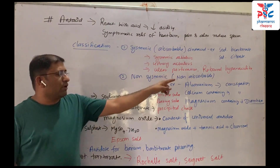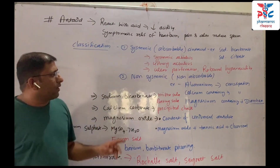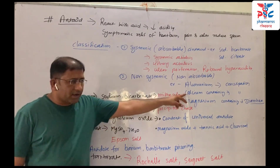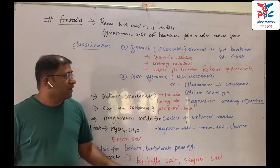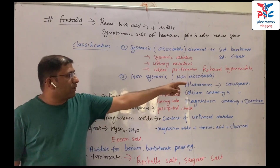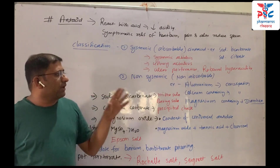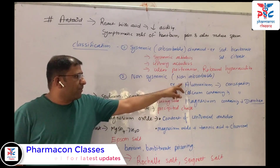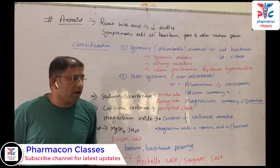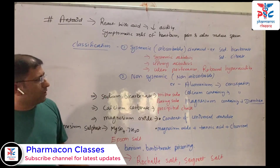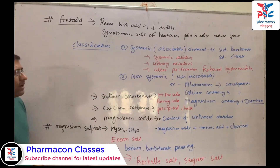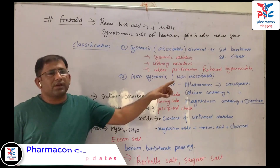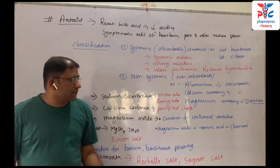Non-systemic antacids are called non-absorbed. They include aluminum-containing, calcium-containing, and magnesium-containing types. Both aluminum-containing and calcium-containing antacids cause constipation.